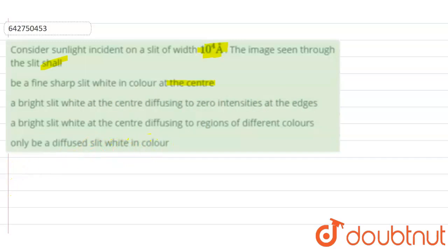So how can we proceed with this question? For questions like this, what we should know is the visible range of light. The visible range of light is given as lambda from 3900 angstrom to 7000 angstroms. We are given the width of the slit.